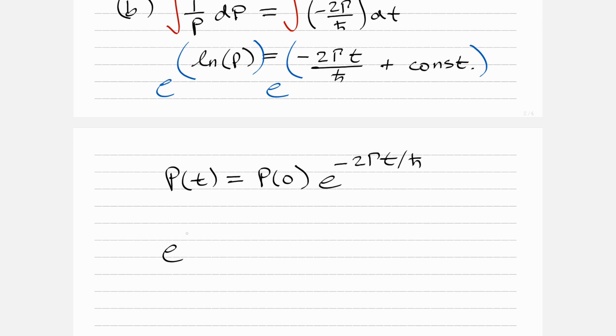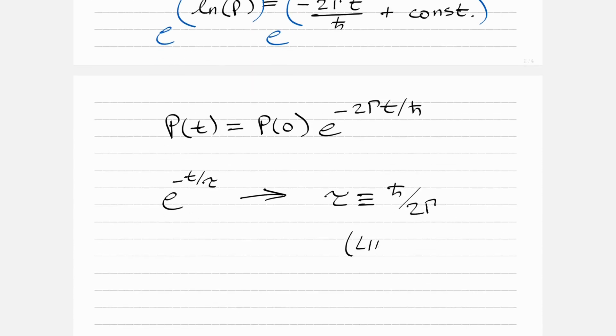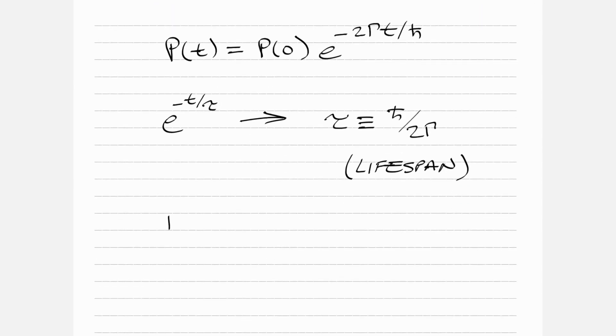So P(t) = P(0) e to the minus 2γt over ℏ bar. We're trying to find something of the form e to the minus t over τ, so therefore τ is defined as ℏ bar over 2γ, and we can call this the lifespan or lifetime of the particle. Therefore we have shown P(t) equals P(0) e to the minus t over τ, where τ is ℏ bar over 2γ.